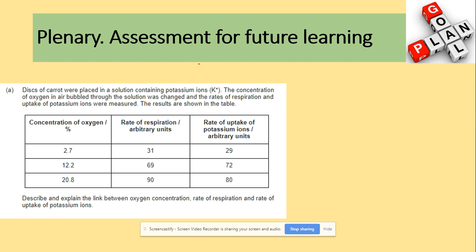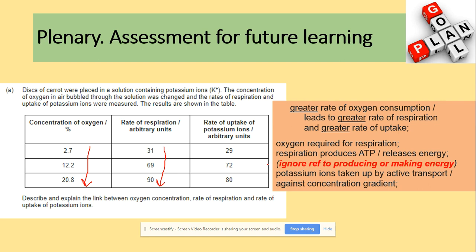A further question asks you to describe and explain the link between oxygen concentration, rate of respiration, and rate of uptake of potassium ions. From the data, a greater rate of oxygen consumption leads to higher respiration and a higher uptake of potassium ions. This is because oxygen is required for respiration, which produces ATP, and potassium ions are then taken up by active transport against the concentration gradient — which requires ATP. That's everything for water and inorganic ions.